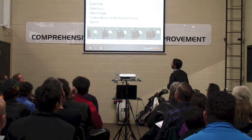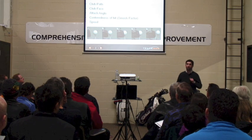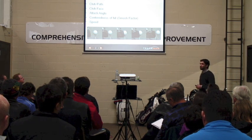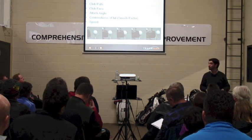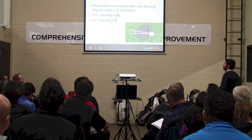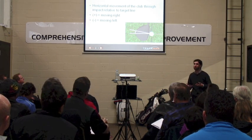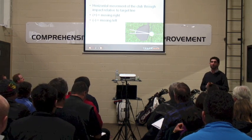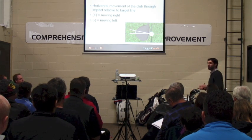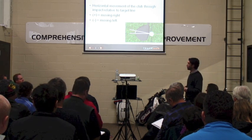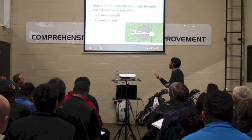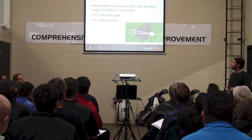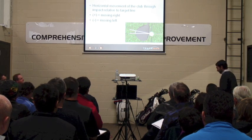So, some key impact variables: club path, club face, a term called attack angle, centeredness of hit or smash factor, and speed. Club path is really the direction the sweet spot of the golf club is moving when it collides with the golf ball. Path can be referenced at the target, left of the target, or right of the target. According to TrackMan, positive means the club is traveling to the right — regardless of left or right-handed player — and negative means to the left.